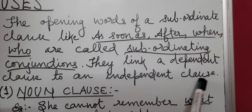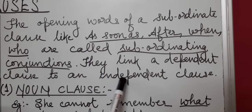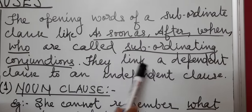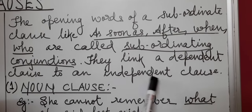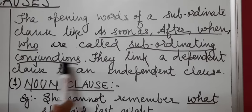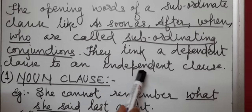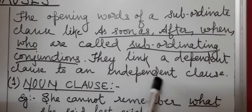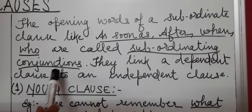Independent clause is jo poora meaning deta hai — principal clause — which can stand alone as a sentence. Dependent clause depends upon the principal clause to give meaning. If we don't write the independent clause, toh dependent clause ka koi arth nahi hoga. Jaise 'jaisi hi ghanti baji' — adhura lag raha hai — jab tak hum principal clause ko nahi likhte, the dependent clause cannot stand alone to give the meaning.